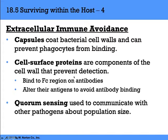Some ways to avoid the immune system include capsules, which coat the bacterial cell wall and prevent phagocytes from binding. Cell surface proteins can prevent detection by binding to the Fc region on the antibody — the constant region that only changes when antibodies switch class — and can alter antigens to avoid antibody binding. Quorum sensing is used to communicate with other pathogens and determine population size within biofilms, and also allows them to change what they secrete and display on their surface.